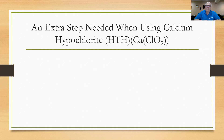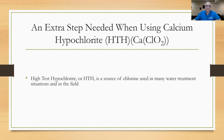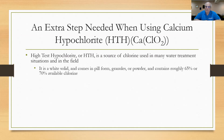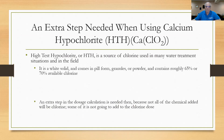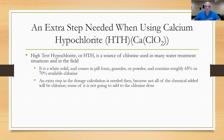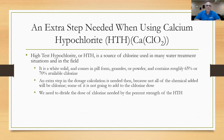If you're going to use HTH, or high test hypochlorite, you would need an extra step. High test hypochlorite is a source of chlorine used in many water treatment situations and in the field especially. It's a white solid that comes in pill form, granular, or powder, and contains roughly 65% to 70% available chlorine. An extra step in the dosage calculation is needed because not all of the chemical you add to the water adds chlorine dose. With chlorine gas, all of the gas was considered part of the chlorine dose, but with HTH only 65% or 70% is chlorine dose. So we have to make that adjustment — divide the dose of chlorine gas needed by the percent strength of the HTH.